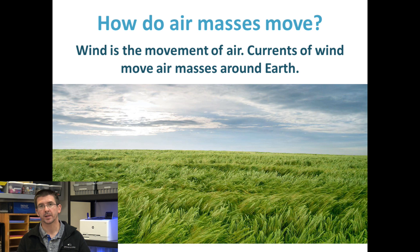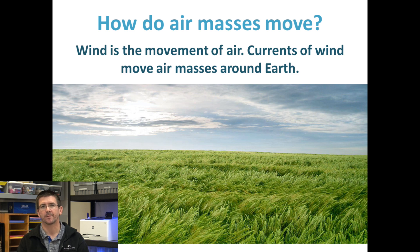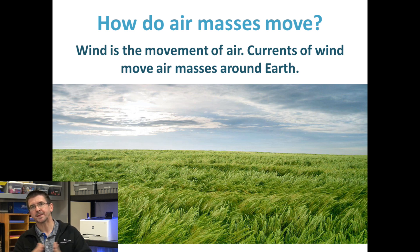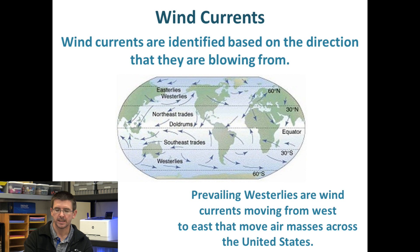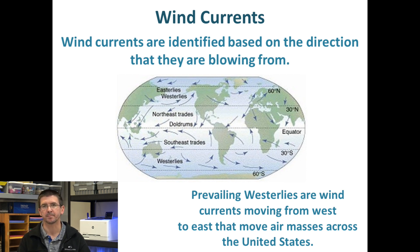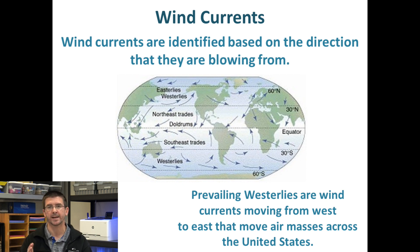Air masses don't sit in one place — they constantly move around the planet because of wind. Wind is just the movement of air molecules, and as the wind blows, it moves the air with it, so these air masses can travel as a result of wind currents. We have a variety of wind currents all around the globe, including more consistent ones that blow regularly high up in the atmosphere, moving our weather around the planet.